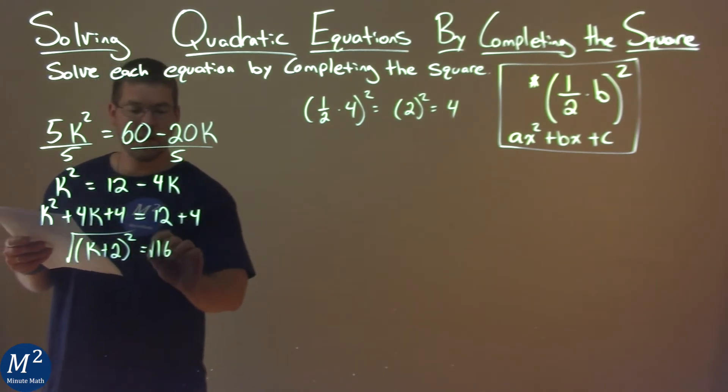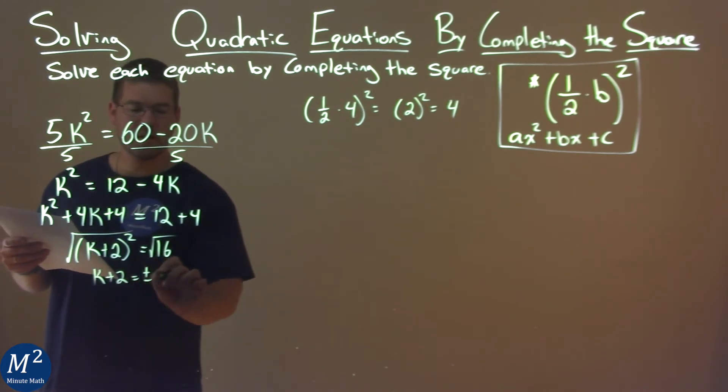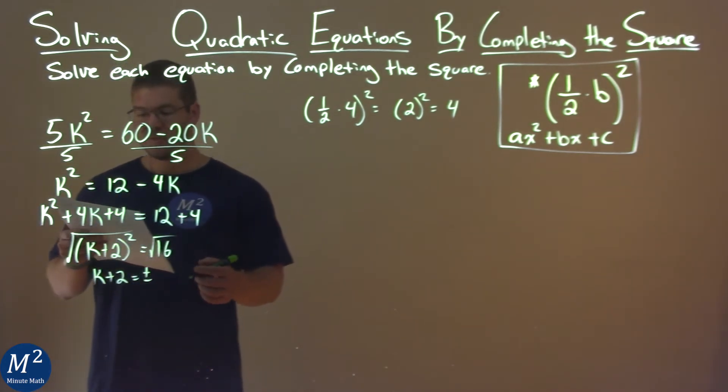I now have to take a square root of both sides, and we have k plus 2 here is equal to plus or minus the square root of 16, which is 4.